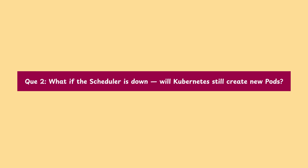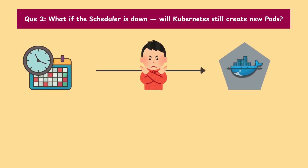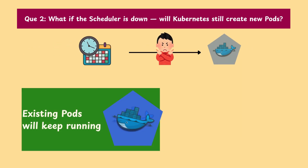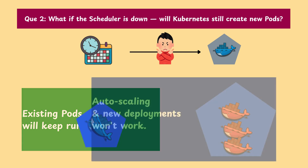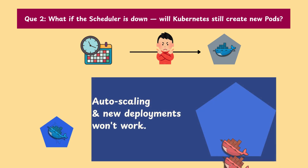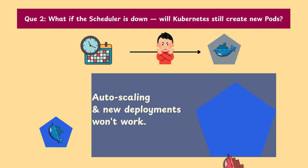Question 2: What if the scheduler is down? Will Kubernetes still create a new pod? No. Without a scheduler, new pods cannot be scheduled on any node. Existing pods will still keep running, but auto-scaling and new deployments won't work.